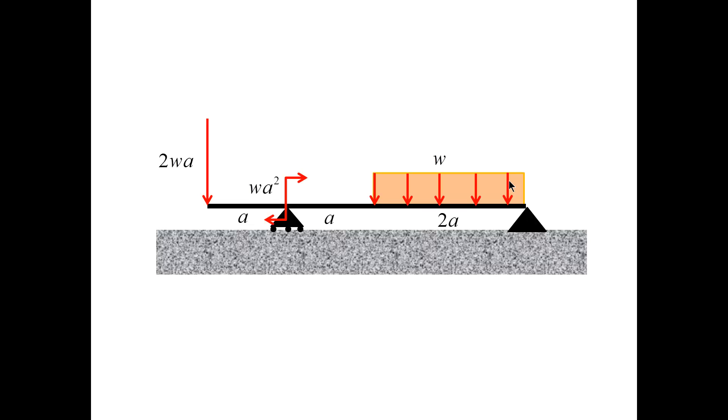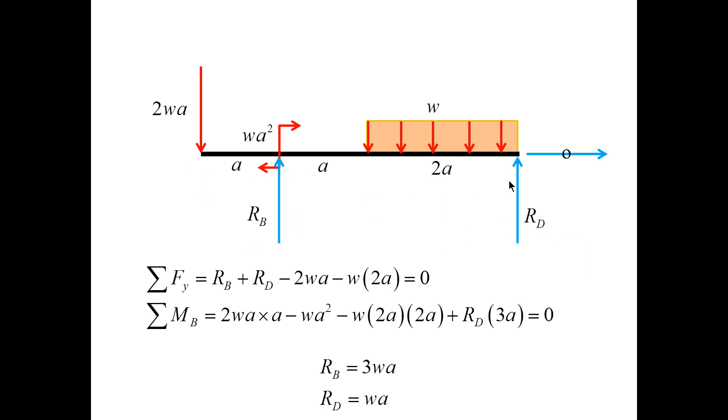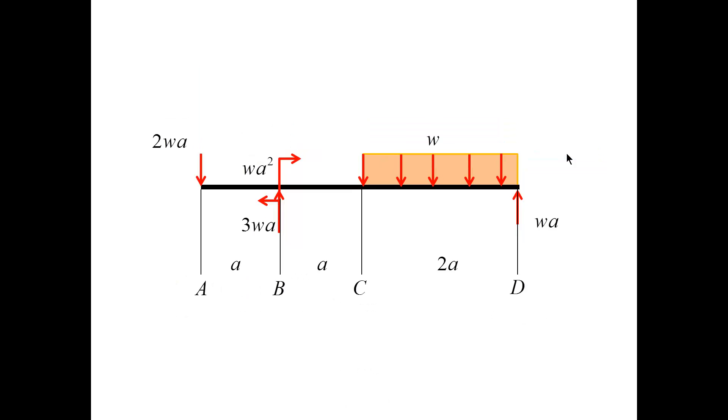As usual, I begin this analysis by calculating the reaction forces. Again, as usual, we set the horizontal force equal to zero, so we have two equilibrium equations to determine the reactions at B and D. Now, the free body diagram for the entire beam, or the free body diagram involving all external forces, is shown here, and I identify three segments: from A to B, from B to C, and from C to D.